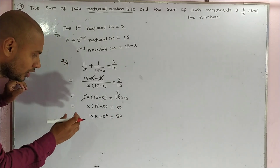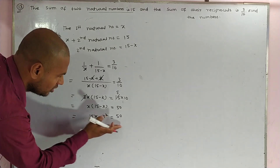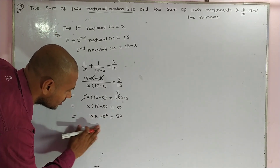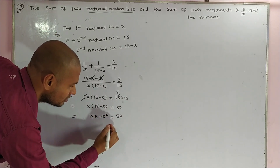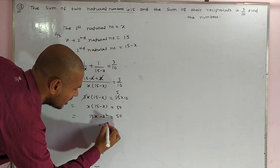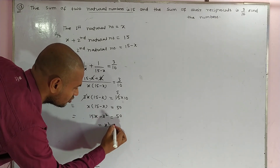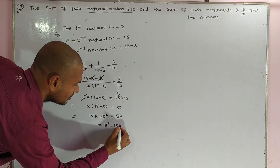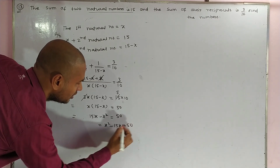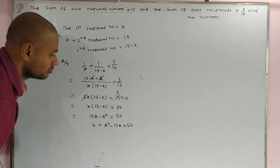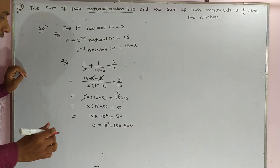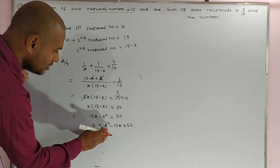Rearranging this quadratic equation: x² goes to the other side as positive, and 15x goes to the other side as negative, giving x² minus 15x plus 50 equals 0.